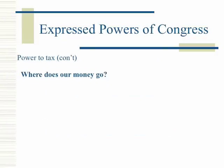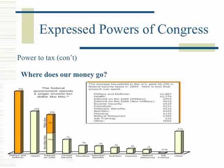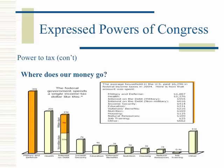Where does our money go? The federal government spends a single income tax dollar on: military and defense, healthcare, interest on the debt, income security, education, veterans' benefits, nutrition, housing, natural resources, job training, and other programs.